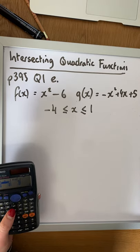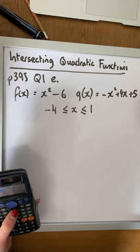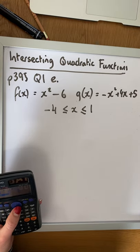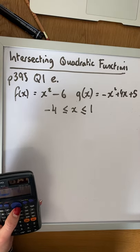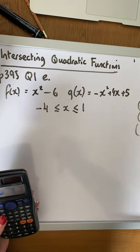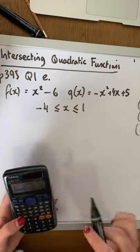We have minus 3, 3. We have minus 2, minus 2. We have minus 1, minus 5. 0, minus 6, and 1, minus 5. That's for the first function. So I have them written on my side panel here.